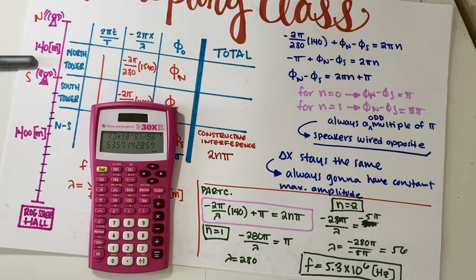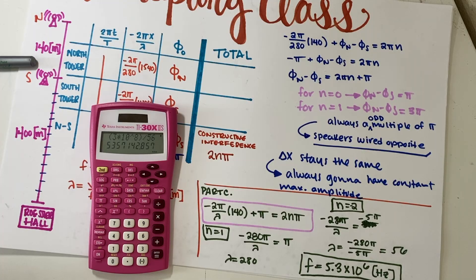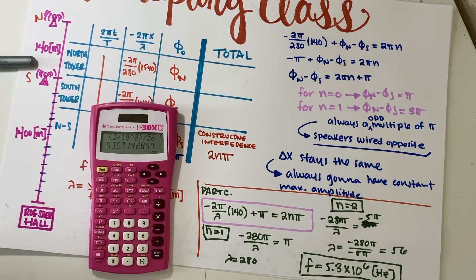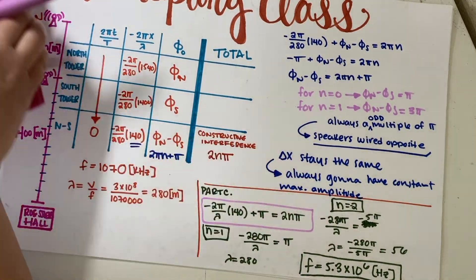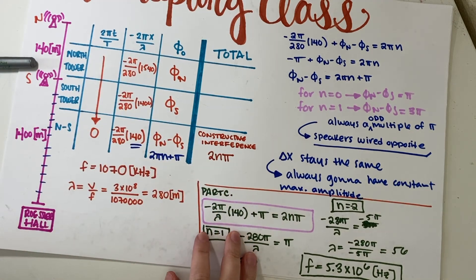A positive frequency corresponds to a positive time, which is physically meaningful. Whatever initial phase difference you pick and whatever n value you use, as long as you substitute consistently and get a positive frequency, that's a valid answer. There are infinitely many correct answers for Part C because there are infinitely many combinations of initial phase and integer n. That's the final result for this problem — I hope you found it useful!